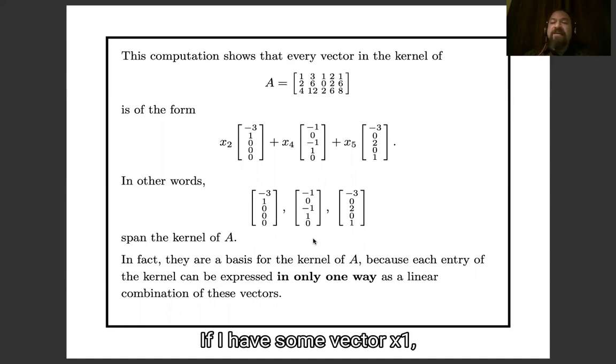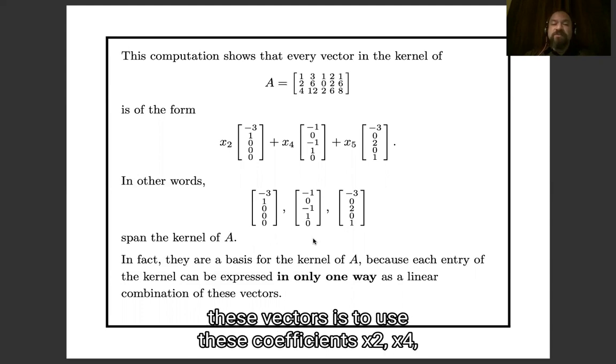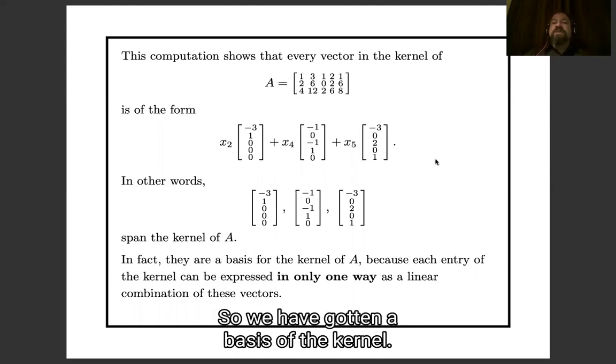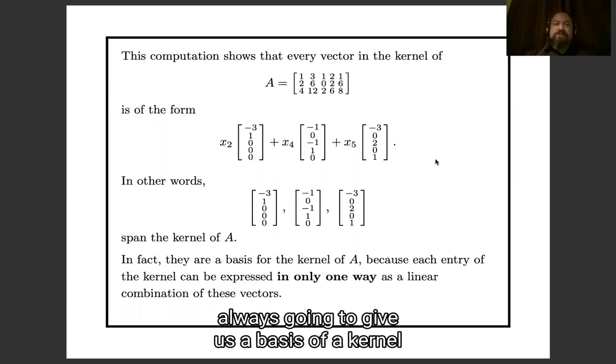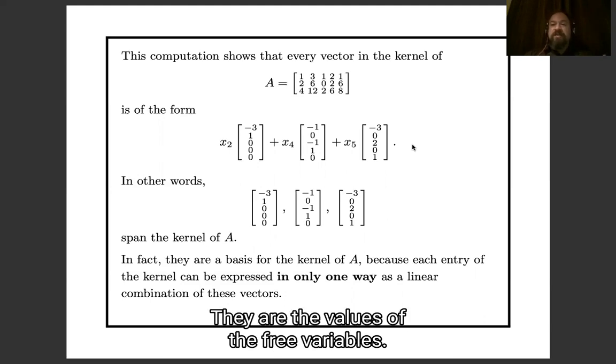If I have some vector x1, x2, x3, x4, x5 in the kernel, the only way to write it as a linear combination of these vectors is to use these coefficients x2, x4, x5, just like this. So we have gotten a basis of the kernel, and this method is always going to give us a basis of the kernel, because the coefficients we get are always uniquely determined. They are the values of the free variables.